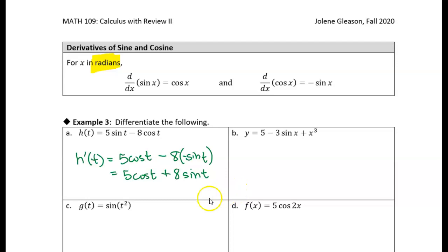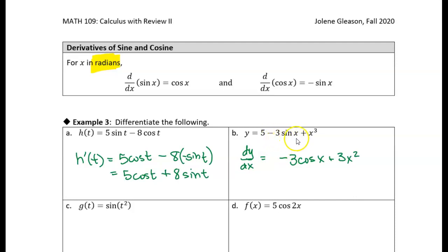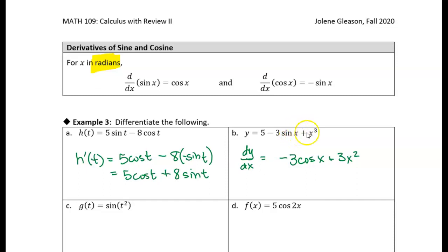So there's the derivative of that function. Now we're taking the derivative of the next one. The first term is just a constant — derivative of a constant is zero. Then we have negative 3 times sine of x; derivative of sine of x is cosine of x. And then we have a power function, so the derivative is just 3x squared. Be careful: without parentheses, it's the sine of just x, and then plus x cubed is a separate power function.